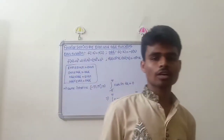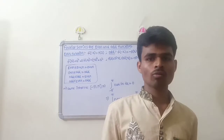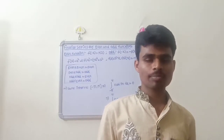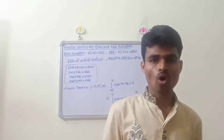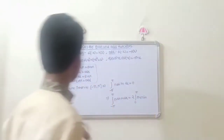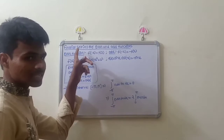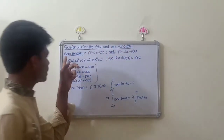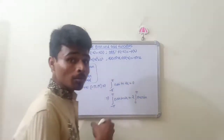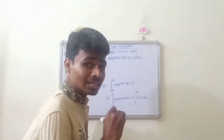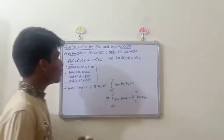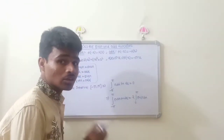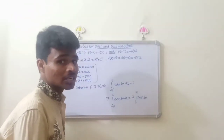Hi guys, welcome to my channel. Today I am going to explain the topic Fourier series expansion by using even and odd functions, Part One. Fourier series expansion for even and odd functions. For even functions, f of minus x equals f of x, and for odd functions, f of minus x equals minus f of x.